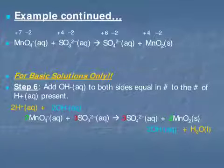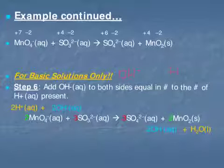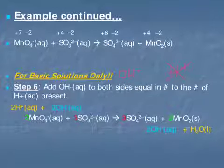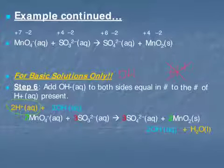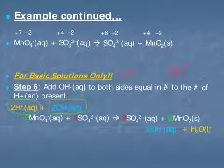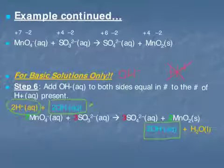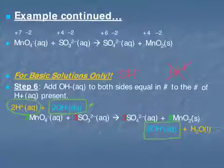Since this is a basic solution, we need hydroxide present and no hydrogen ions. The way we get rid of hydrogen ions is to add hydroxides to both sides in equal number to the hydrogen ions present. There were 2 hydrogen ions on the left-hand side, so we add 2 hydroxides to the left-hand side. Whatever we add to one side, we must add to the other, so 2 hydroxides go on the right as well. The hydrogen and oxygen counts on both sides remain equal.